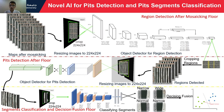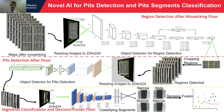Our novel AI for pit detection and classification uses a three-floor architecture. The first floor takes the outcome map from mosaicing and passes it to the first object detection model for region detection. The second floor takes the output of the region detector, crops the detected regions, and passes them to the second object detector for pit detection. The detected pits are then cropped and sent to the third floor — the segment classification and decision fusion floor — which classifies the pit segments and merges the six classes to give a final decision on each pit's health.